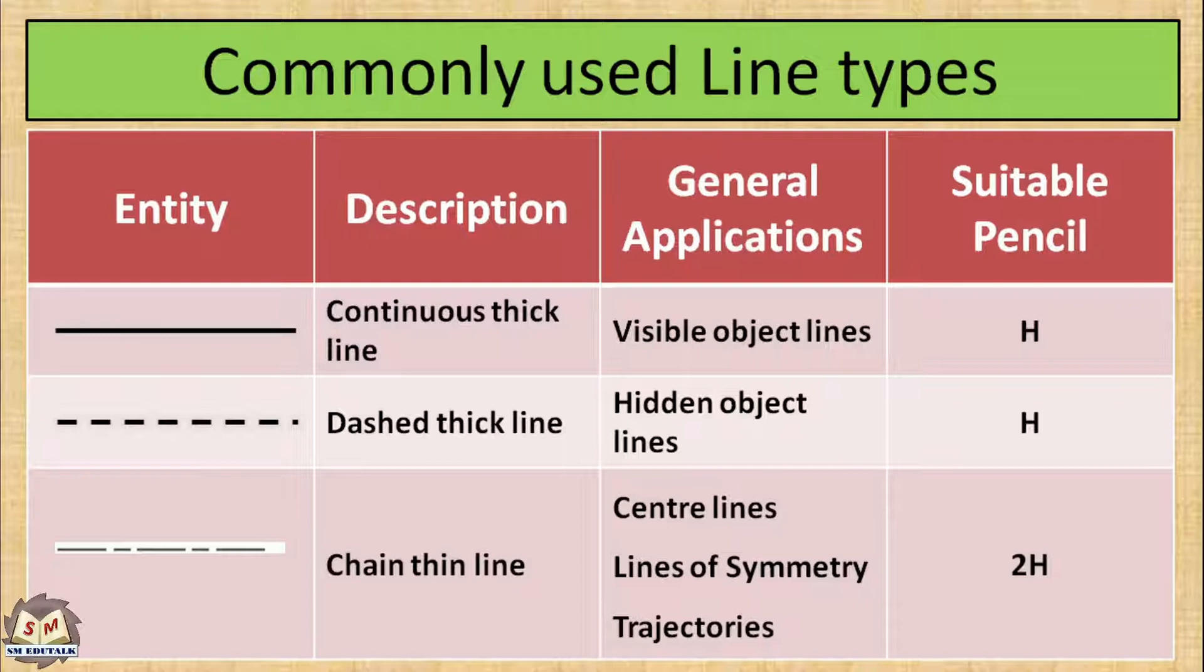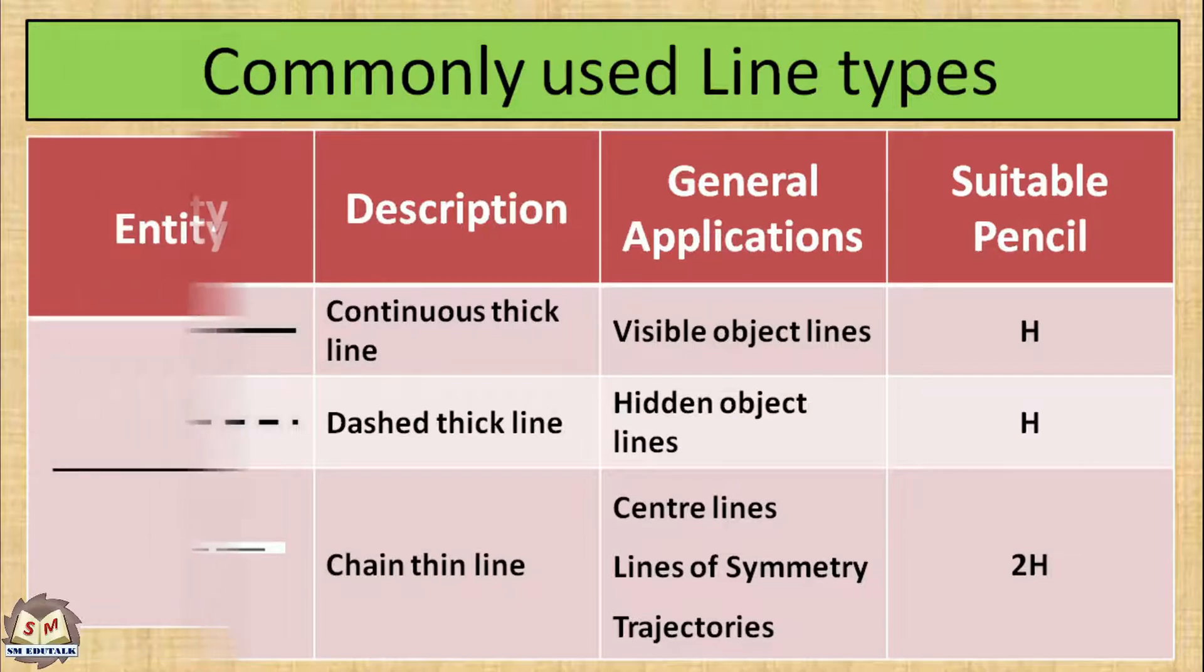And the third one, chain thin line. This line is used to represent center lines, lines of symmetry and trajectories. Usually we are using 2H pencil to draw this kind of line.